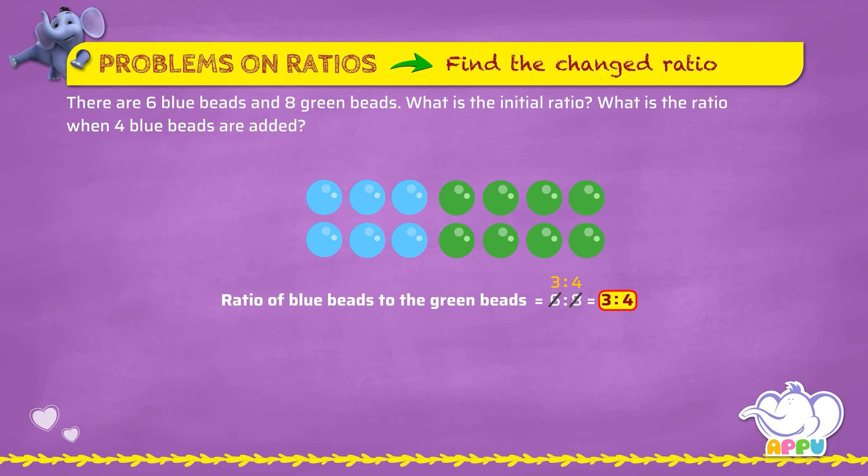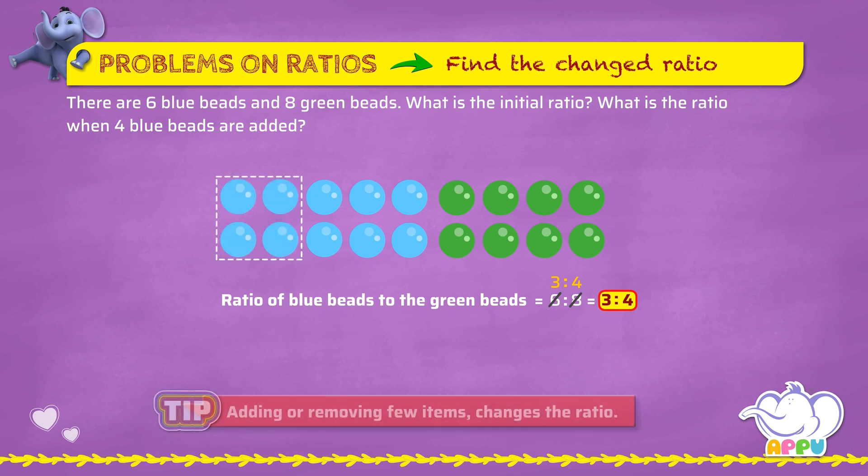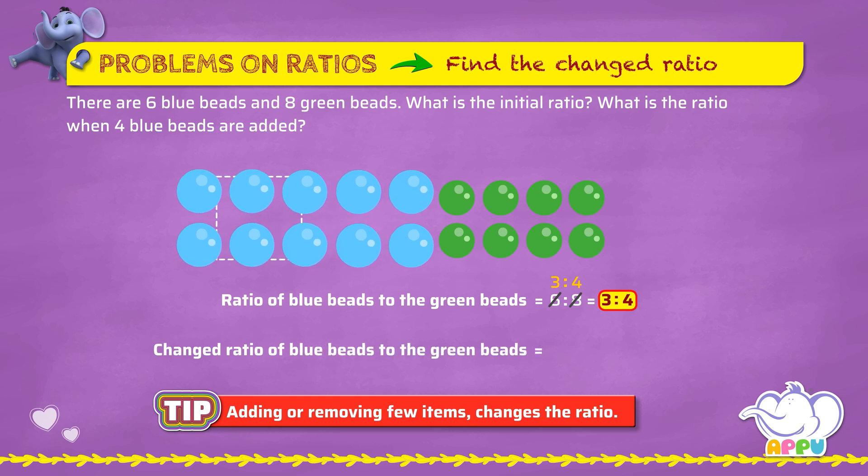Let's add four blue beads. Now there are ten blue beads and eight green beads. The changed ratio of blue beads to the green beads is 10:8.